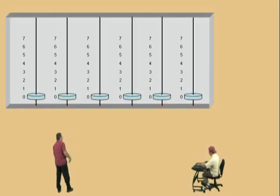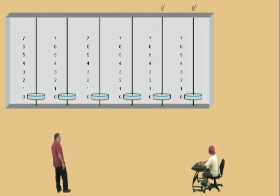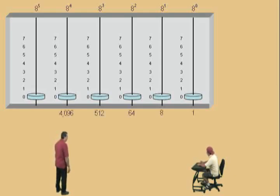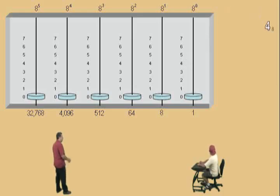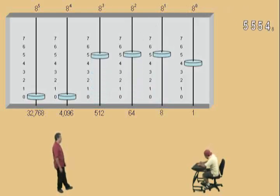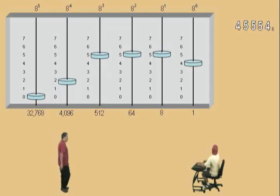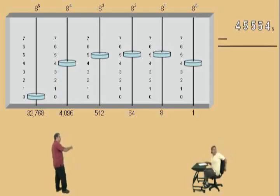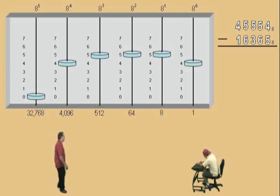All right, Charlie, we have 8 digits, we're in base 8. Let's list our place values. And let's enter our base 8 number. There's a 4 in our 8 to the 0 power, a 5 in our 8 to the 1st power place value, another 5, another 5, and a 4 in our 8 to the 4th power place value. There it is. Now, from that number, we're going to subtract 1, 6, 3, 6, 5 base 8. Don't get scared.